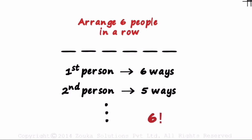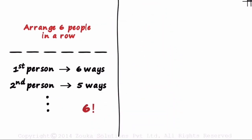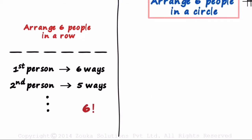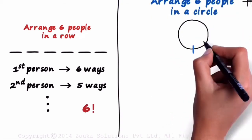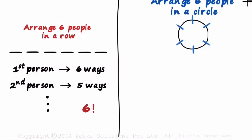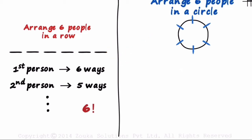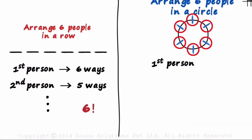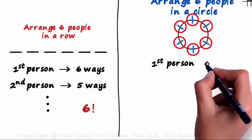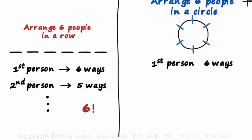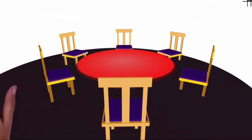Now, let's move on to the circular arrangement case. In how many ways can we arrange six people in a circular fashion? Let's draw a circle — assume it's a circular table with chairs around it, and six people can be seated like this. Following the same approach: in how many different ways can the first person be seated here? It seems simple — as there are six chairs around the table, the first person can be seated in six different ways. Correct? No, it's not correct. The first person cannot be seated in six different ways.